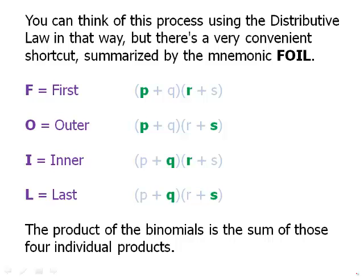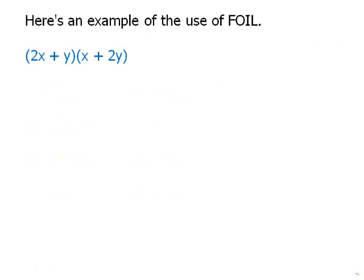The product of the binomials is the sum of those four individual products. In other words, if we add first plus outer plus inner plus last, that is the product of the two binomials. Here's an example, the use of FOIL. So let's go through this very slowly.